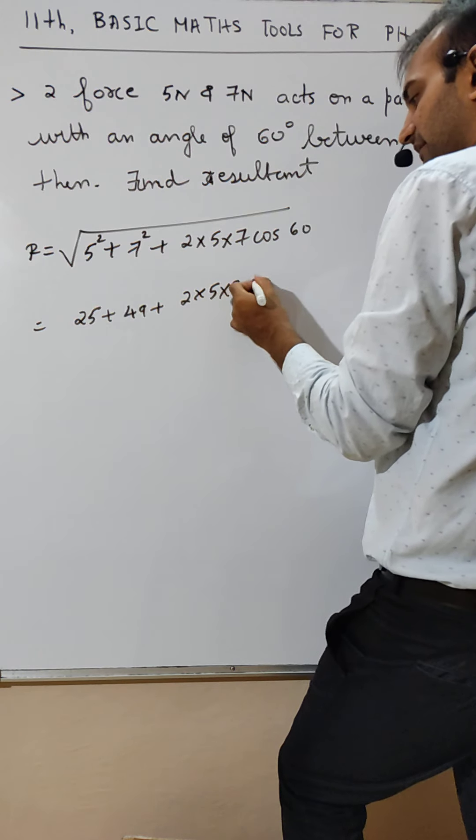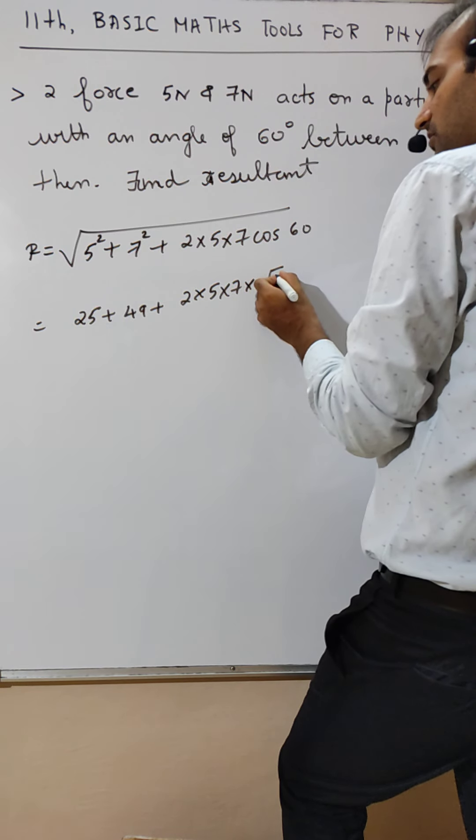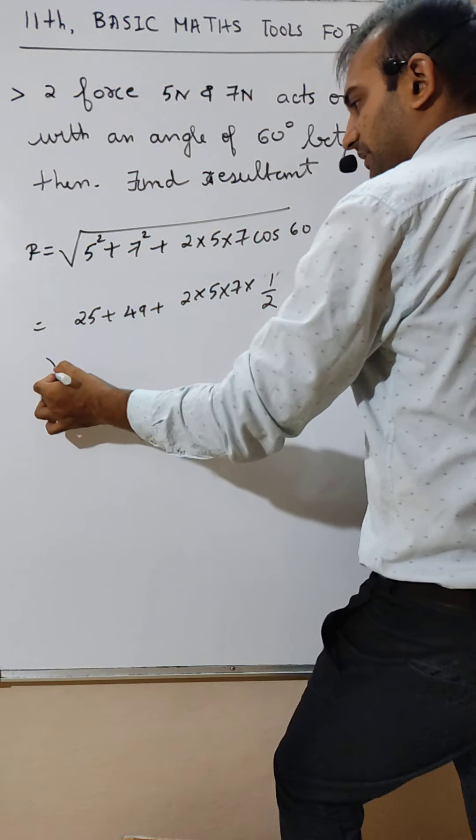Smart bacha, multiply bacha. Cos 60 is half, correct.